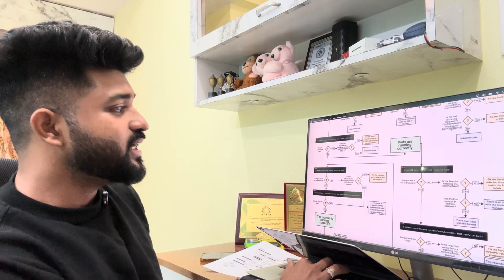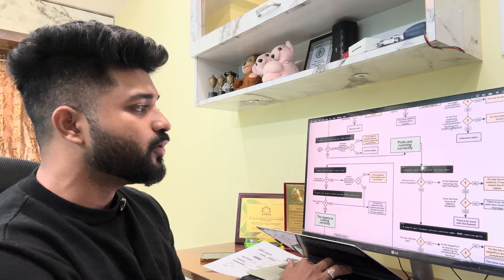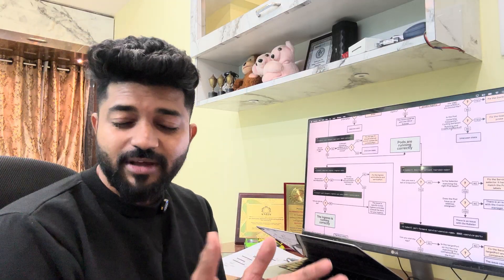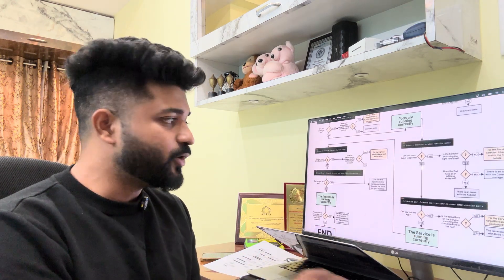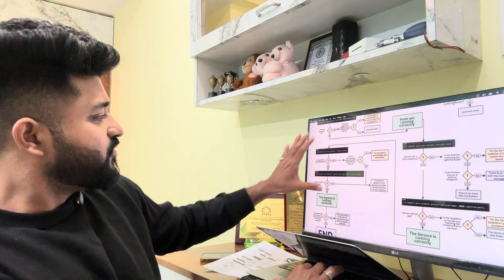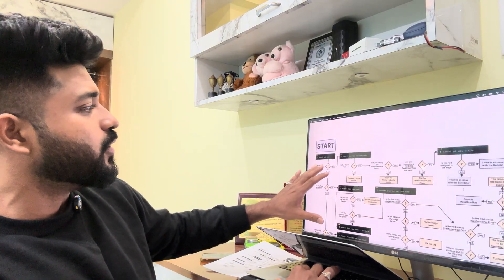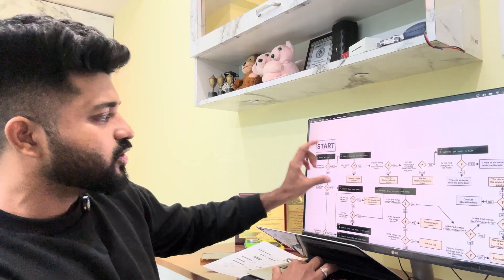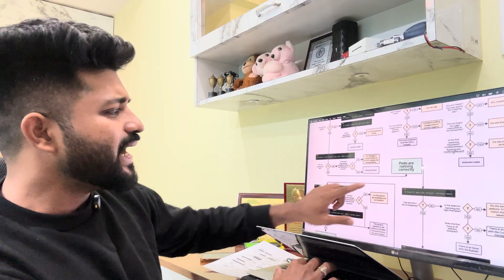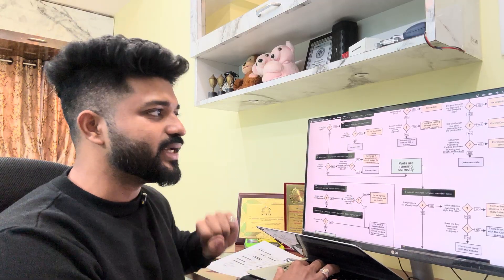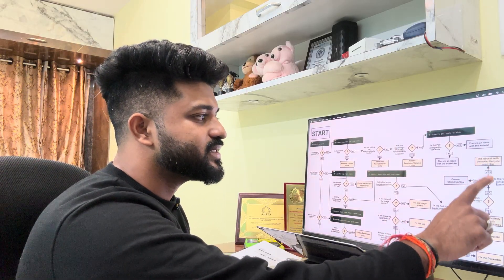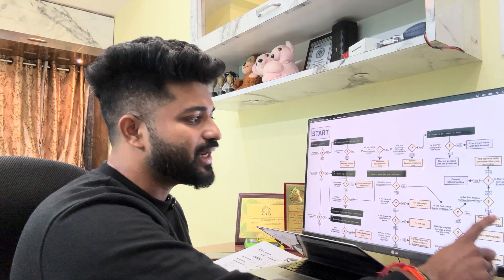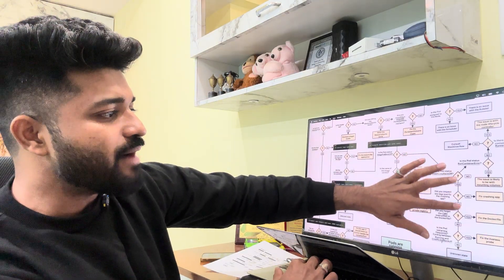For service troubleshooting: `kubectl describe service <service-name>`. Can you see a list of endpoints? Yes — use `kubectl port-forward`. No — check if the selector is matching the right label and pod, because selectors and YAML files are key. Everything about node lifecycle controller issues — yes or no — is shown, and if no, consult Stack Overflow.